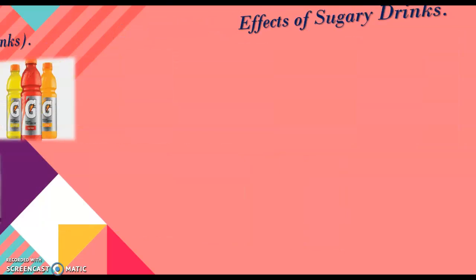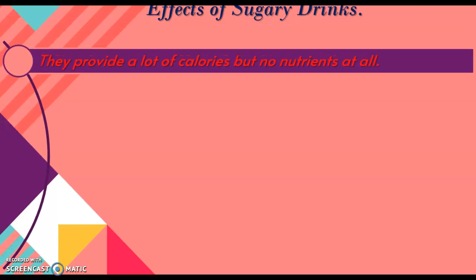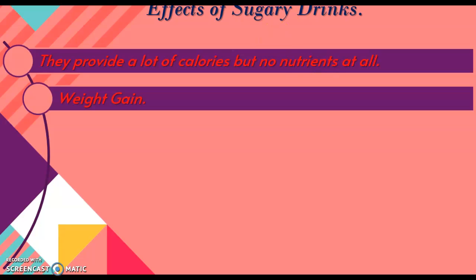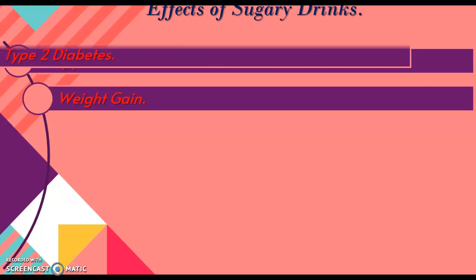What are the effects of sugary or calorie drinks? First of all, as the name suggests, these drinks provide a lot of calories but they do not have nutrients at all — they don't have vitamins, proteins, or carbohydrates. Since they have a lot of calories and a lot of sugar, people who drink a lot of these types of drinks can suffer from weight gain and can become overweight.